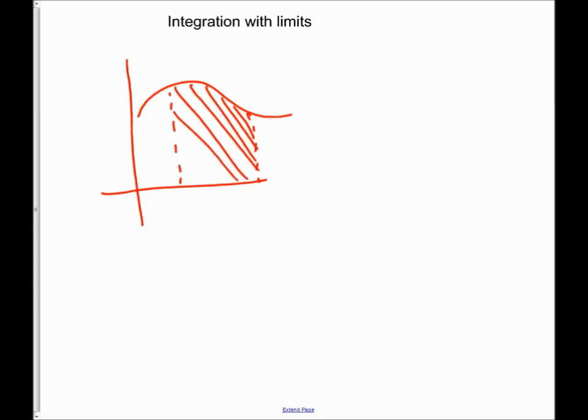As well as doing the opposite of differentiation, I can use integration for another thing which is to find the area under a piece of graph. Here I've got a piece of graph. I want to find the area between the graph and the x-axis, but I don't want to find the whole area going forever either way. I want to find it between two particular numbers.